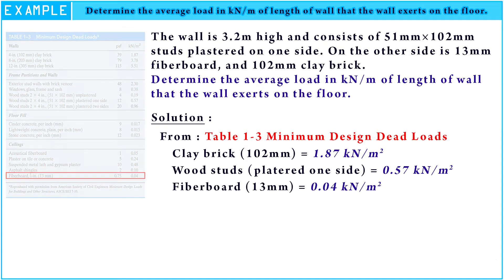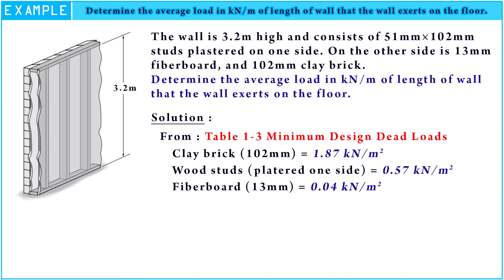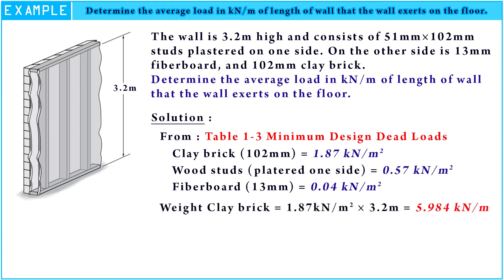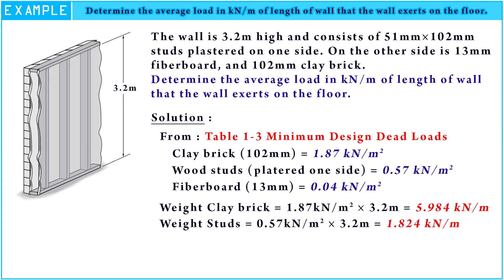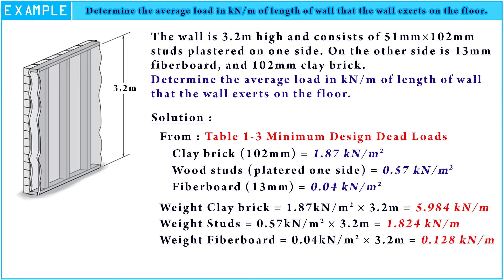Hence, we multiply the minimum design dead loads of wall clay brick with the height of our wall. The weight of wall clay brick is 36.225 kilonewton per meter. The weight of studs is 1.824 kilonewton per meter, and the weight of the fiberboard is 0.128 kilonewton per meter.